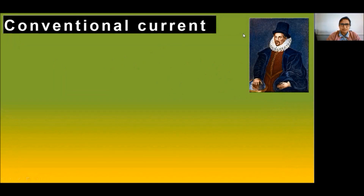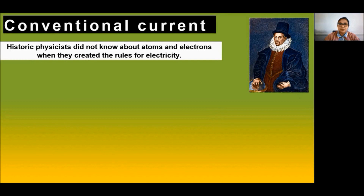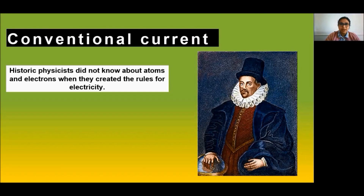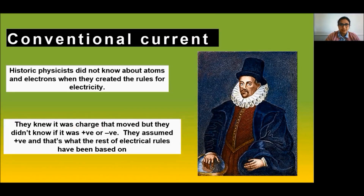What is conventional current? Electrons were not known at the time when the phenomenon of electricity was first observed. Historic physicists did not know about atoms and electrons when they created the rules for electricity. So electric current was considered to be the flow of positive charges, and the direction of flow of positive charges was taken to be the direction of electric current.